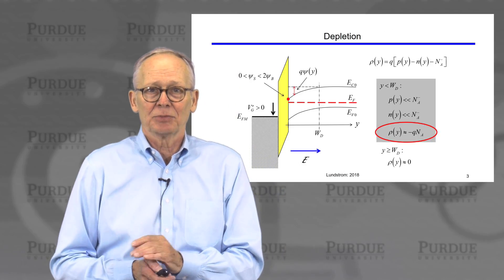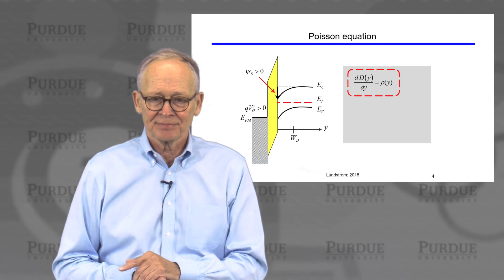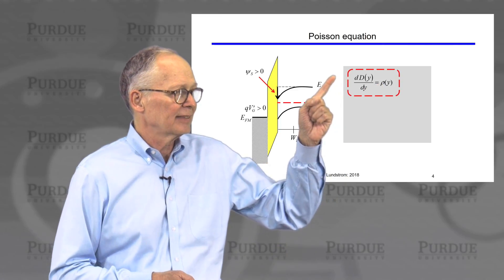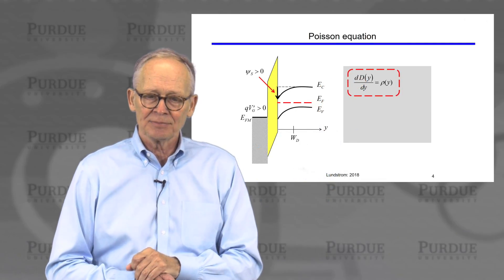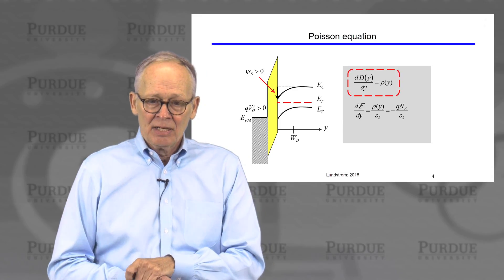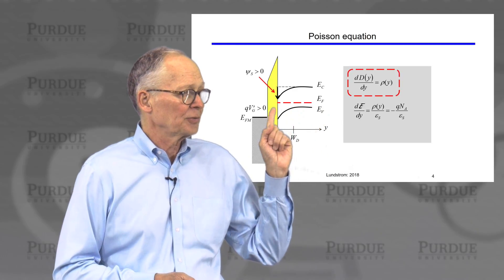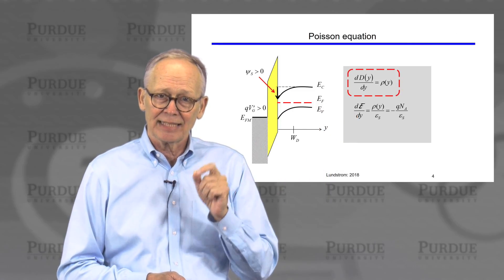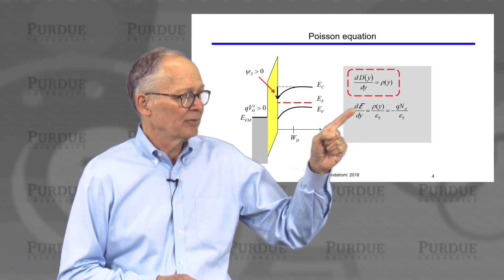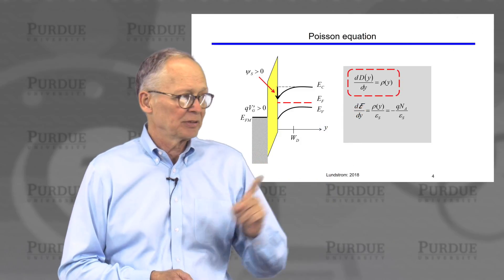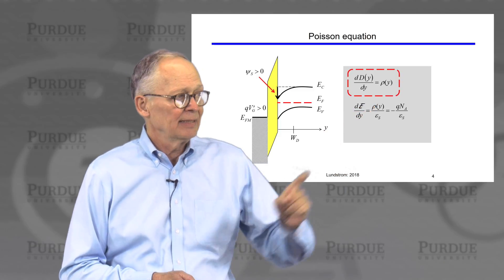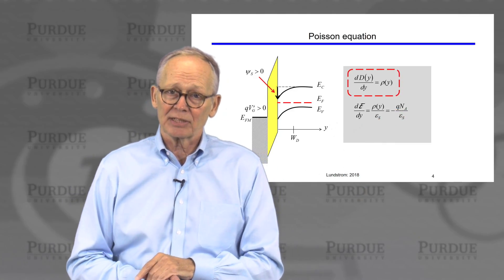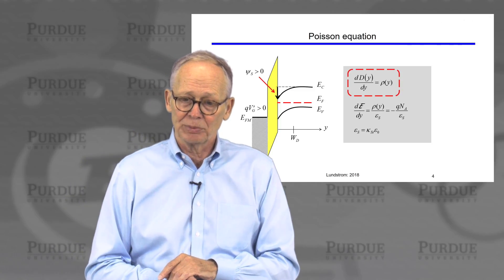If we have the space charge density, we can solve the Poisson equation and find the electric field. Our Poisson equation in 1D is: divergence of D equals rho, or in 1D, dD/dY equals rho(Y). In the region near the surface where we have an electric field, we write D = epsilon times E, giving us dE/dY equal to the space charge density over the dielectric constant. Since the space charge density is just constant — Q times the doping density — the slope of the electric field is constant, given by the doping density.